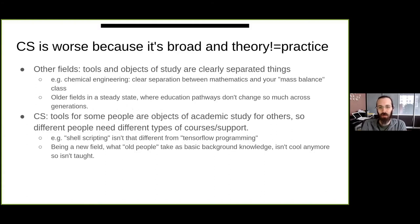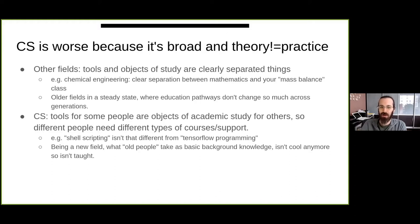Computer science is worse because it's broad and the theory is not exactly equal to the practice — or maybe too close to it. In chemical engineering, for example, there's a clear difference between the mathematics you need to know and the content of your degree program. But is shell scripting part of a CS degree program? No, because it's not academic — yet we assume everyone will know it because it's what we do as computer scientists. This mismatch is especially true in the divide between traditional computer science and data science, and our department combines both.